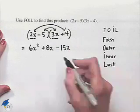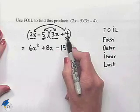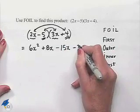And then L stands for last. If we take our last terms in each of the binomials, we'll have negative 5 times 4. We'll write down negative 20.